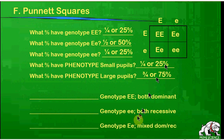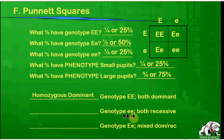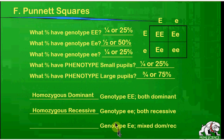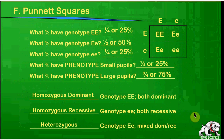These genotypes have specialized names. The genotype big E, big E — where you have both dominant genes — is called homozygous dominant. The genotype with both little e's is called homozygous recessive. Homozygous means same gene — same gene dominant, or same gene recessive. The genotype big E, little e — a mixed dominant-recessive — is called a heterozygous arrangement. We'll stop here on the notes, and we should be able to do the first page of our homework packet.